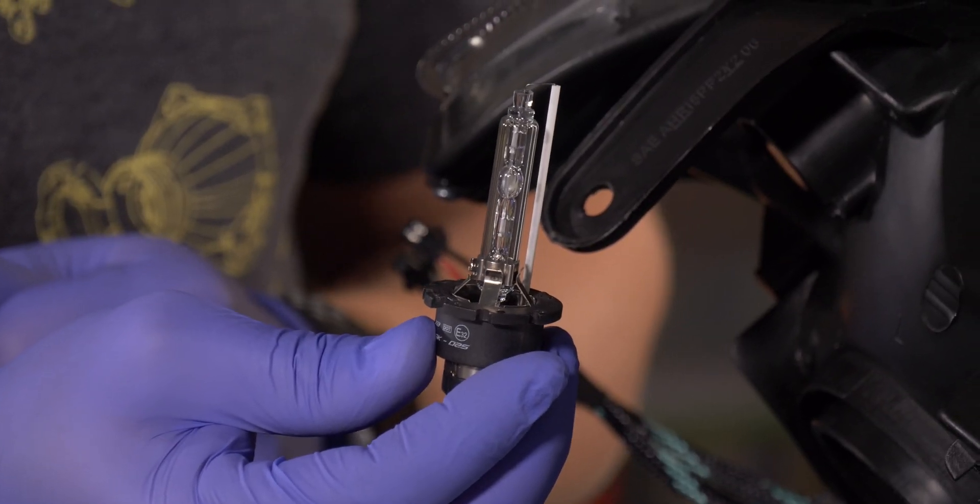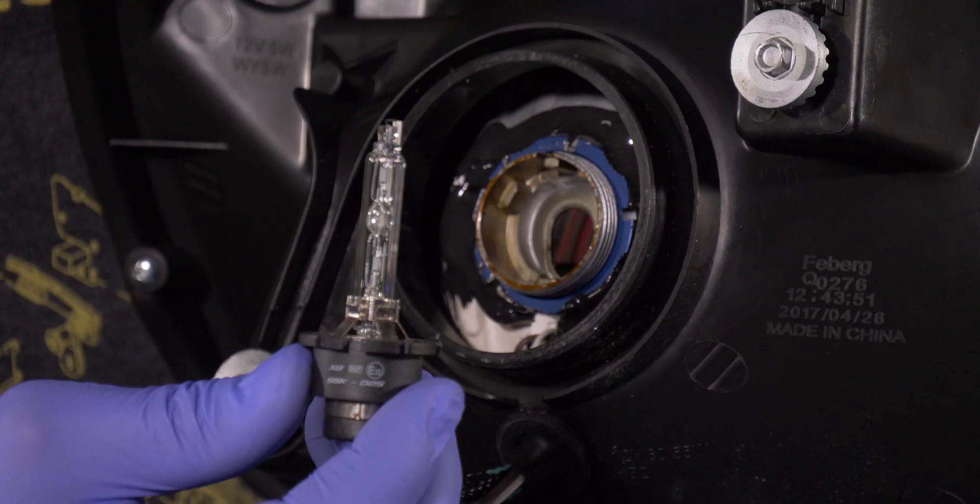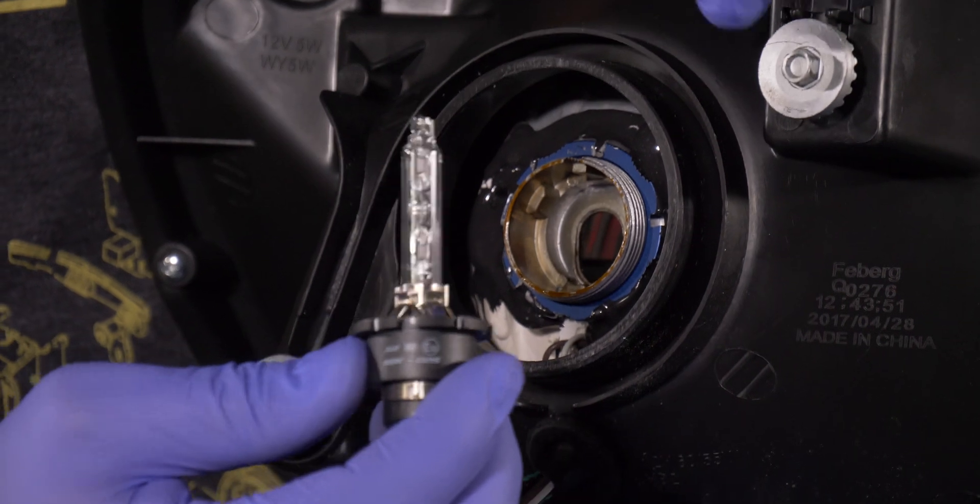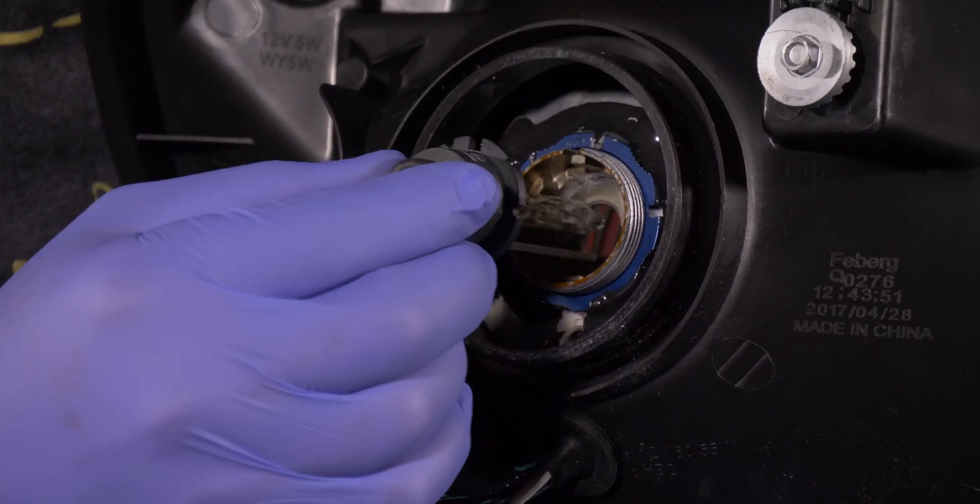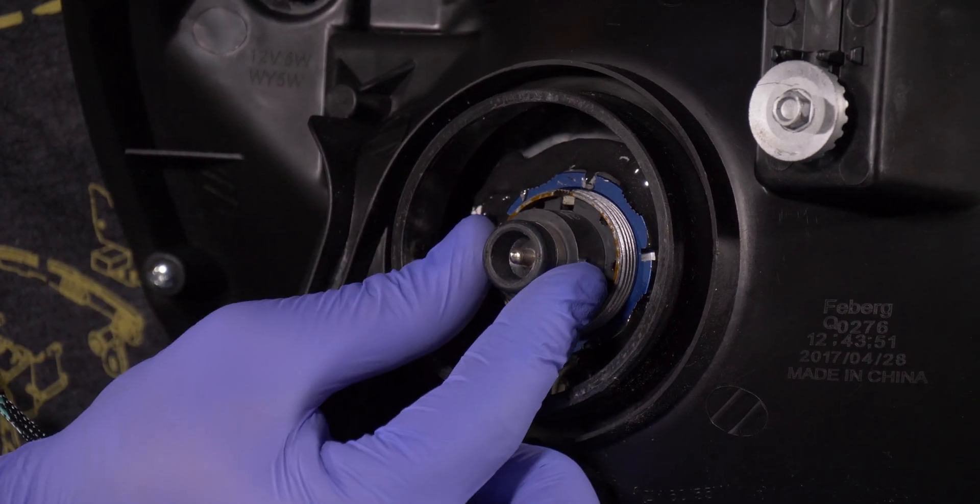Now that that's clean, we can go ahead and put the bulb in the projector. Now when doing this, make sure you align this square notch with the tab inside of the projector. Like so.